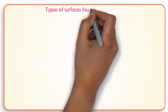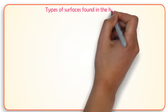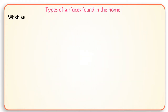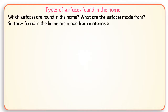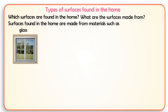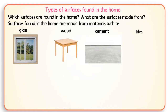Types of surfaces found in the home. Which surfaces are found in the home? What are the surfaces made from? Surfaces found in the home are made from materials such as glass, wood, cement, and tiles.